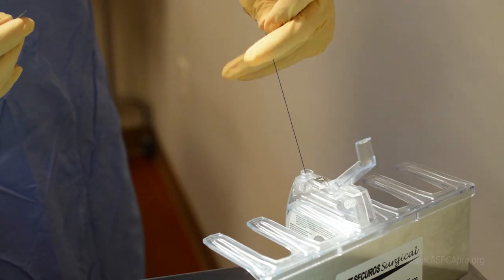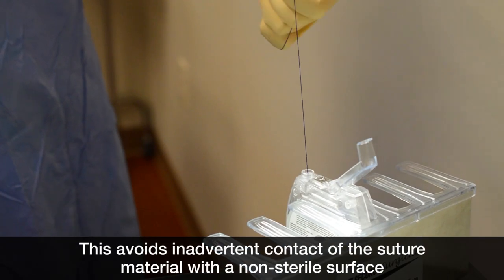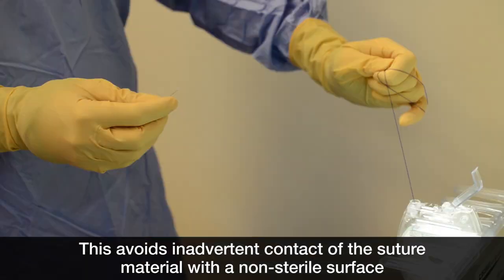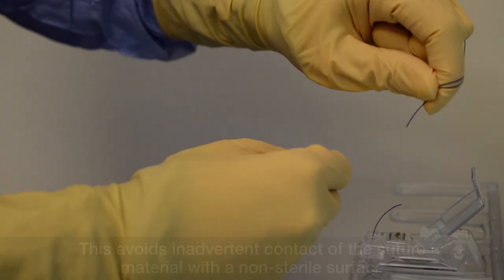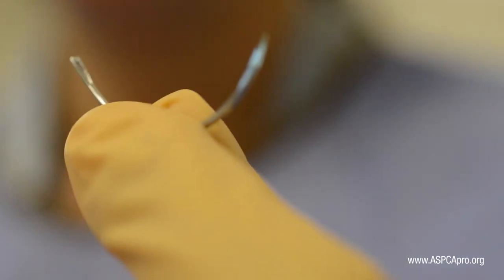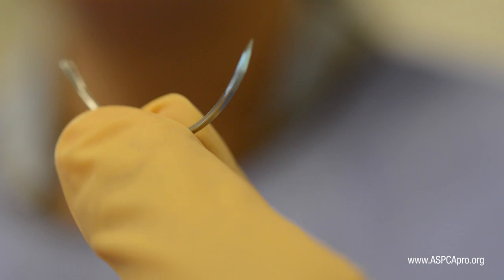Wrap the desired amount of suture around your hand as you retrieve it from the cassette. Then cut it with a blade or needle holders, still maintaining control. Hold the selected needle in your non-dominant hand with the needle curving away from your hand.